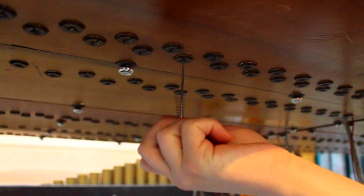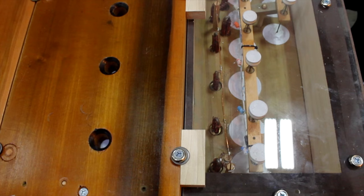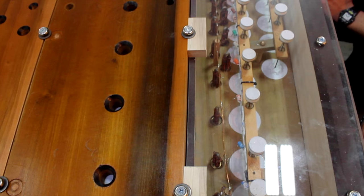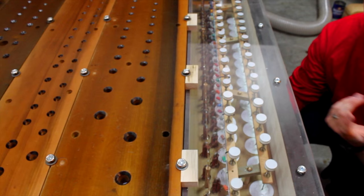You'll see that the response on the valves is really quick. As the air exhausts, the pouches drop, and then the pressure from inside the chest can go up through the toe board and into the pipe.